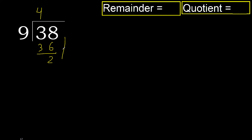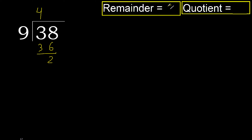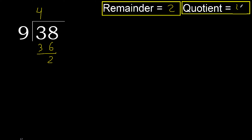Next — that is not a number, therefore finish it. The quotient is 4 and the remainder is 2.